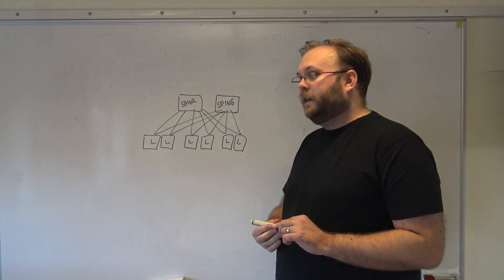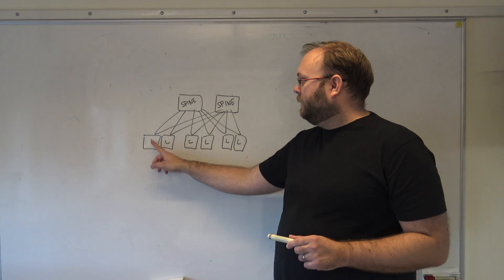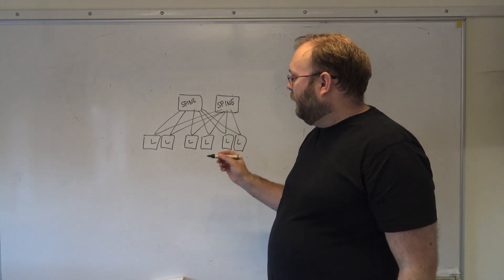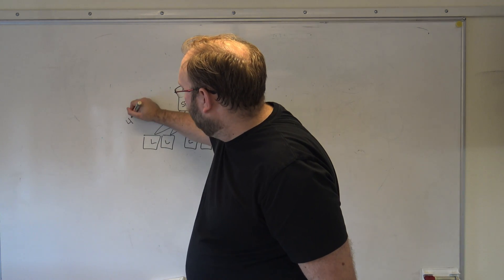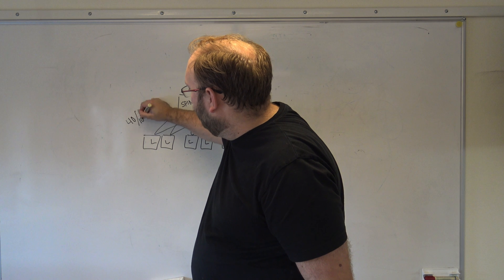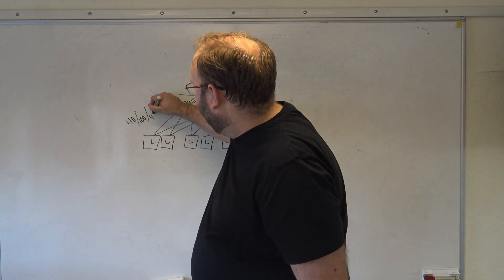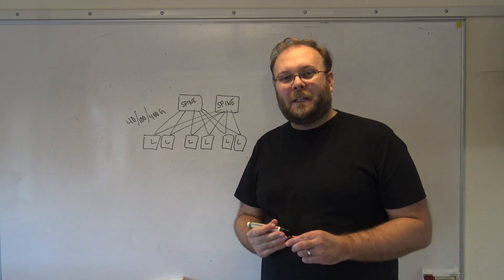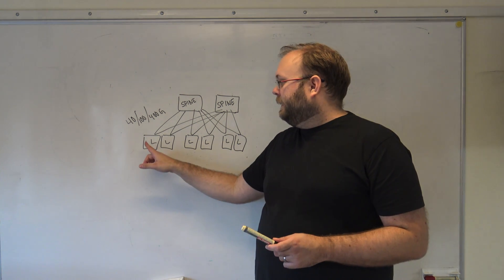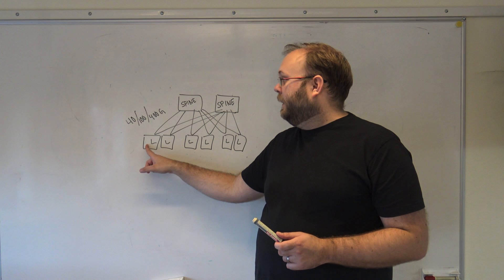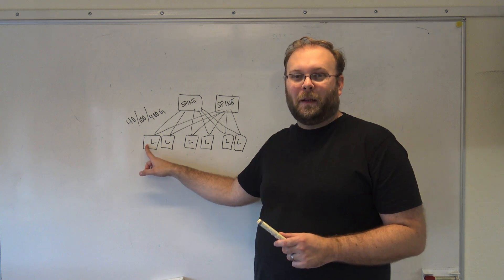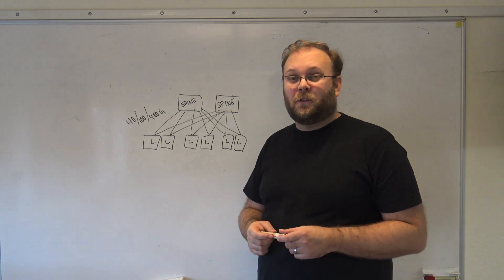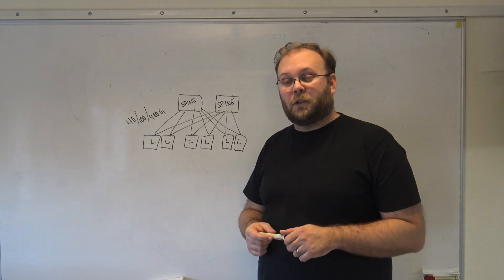So here you have each leaf switch is connected to each spine switch and normally this is 40 or 100 or 400 gig. So if you imagine this, then this leaf switch has possibly 800 gigs of uplink.